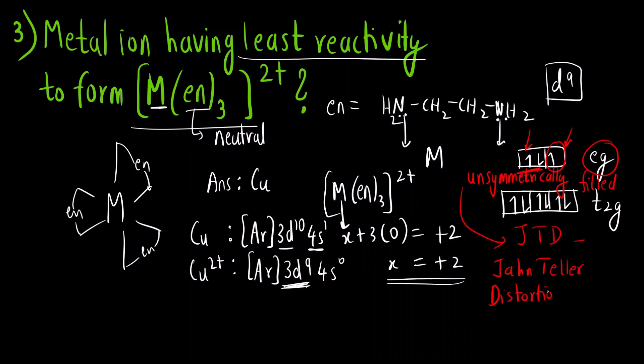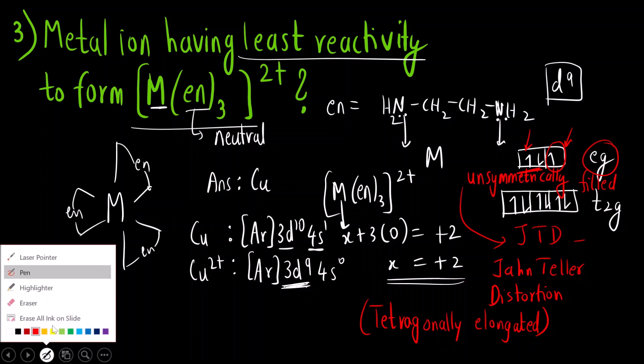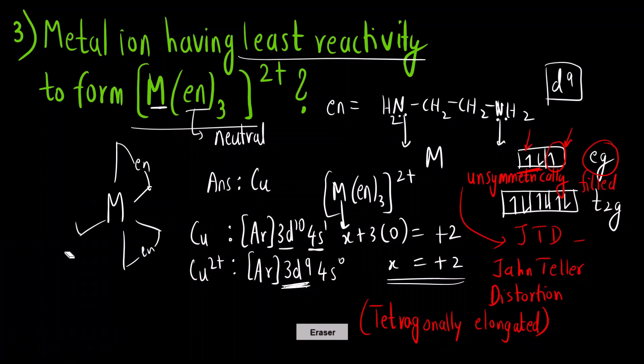Now here you can see this eg orbital is unsymmetrically filled, here there is one only one electron here there is two electrons so we say that the eg level is unsymmetrically filled. And we know whenever the eg level is unsymmetrically filled this will undergo JTD or John Teller distortion. So here Z-out complexes or tetragonally elongated complex are formed.